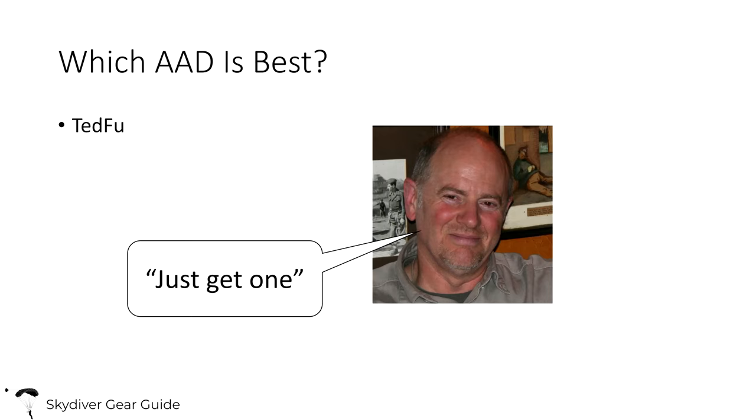Which AAD is best? I'm going to borrow an answer from one of my mentors, Ted Farnsworth, a master rigger here in Oregon — his answer when someone asks which AAD to get is simply: just get one. It's far better to have any of the three AADs than to not have one. Generally speaking, they're all trusted in the market and all likely to save you if you need saving. Certain people have preferences based on anecdotal experience, but generally any of these three are going to be good AADs to have.